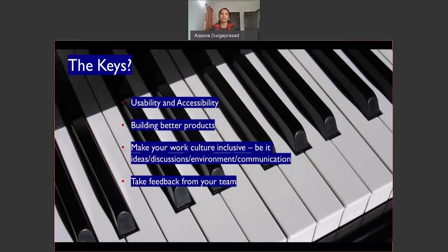So what are the keys when it comes to diversity in the workplace? One is the usability accessibility. When you have a diverse set of workforce, you will bring more usability and accessibility to your product. Building better products also is one of the key factors that get influenced positively due to diversity. And I think we need to make our culture more inclusive. It might be even the smallest of things like an idea or discussion or some kind of initiative. I think you need to include different kind of people in each of these to really get the best. And of course, take feedback from your team. I know we all try to be inclusive, but is it really happening? Is there some way you're going wrong in making somebody feel out of place? So this is something that you need to give your attention to.